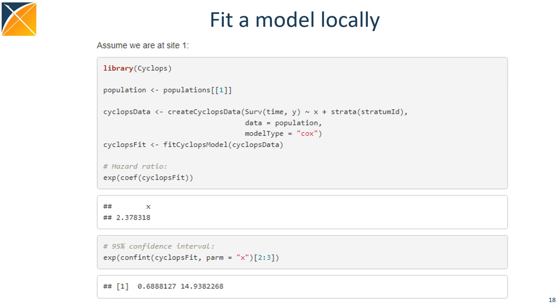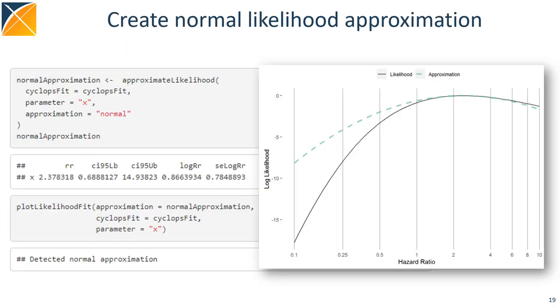Now, imagine we're at site 1. We can use the Cyclops package to fit the conditional Cox regression in the usual way, and estimate the hazard ratio and confidence interval. Now, suppose we want to estimate the likelihood curve. We can use a normal approximation, which is expressed just as the point estimate and standard error. But, as we can see in the plot on the right, the normal approximation denoted by the green dashed line is not a good fit for the real likelihood denoted by the gray solid line.